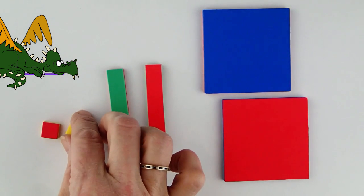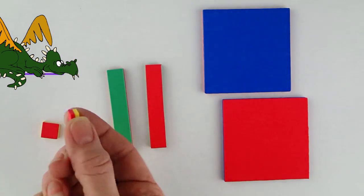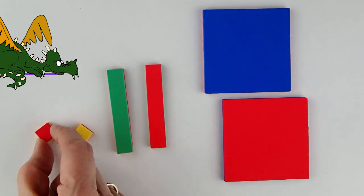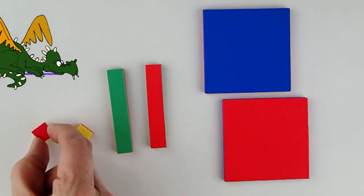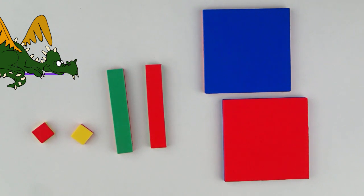Let's take a closer look at some of the algebra tiles. You will notice that the unit piece is red on one side and yellow on the other. The red side represents the opposite of the yellow side. Since the yellow side represents 1, the red side represents negative 1.